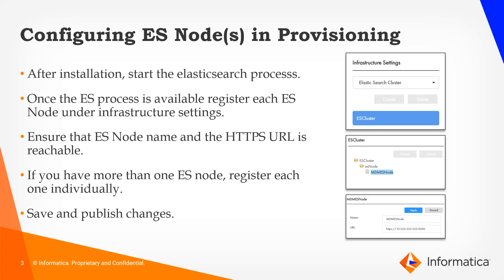Once you have installed an Elasticsearch node or cluster, you will have to register this node with a particular ORS. Once the ES process becomes available — meaning once you have started the Elasticsearch batch file or shell script to bring up the ES server — you will go under the infrastructure settings available in the provisioning tool. Here you'll ensure that you add an ES cluster, and once that's done, you will add an ES node. This ES node should bear the same name as the ES node you provided in your elasticsearch.yml file.